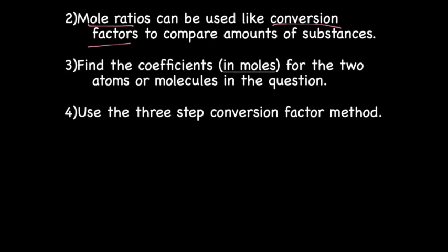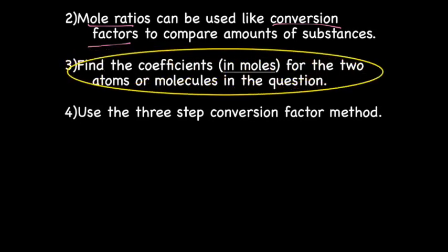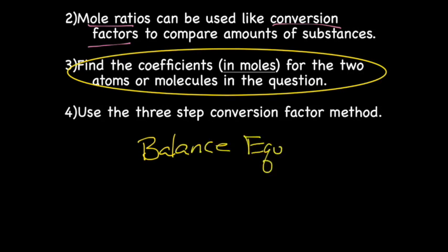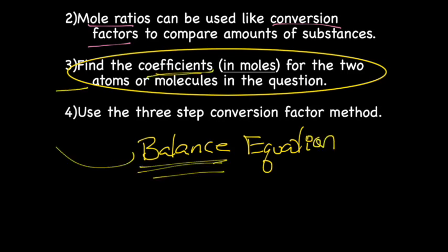When doing mole-mole conversions, you'll find the coefficients in moles — using the unit moles — for the two atoms or molecules in the question. This information comes from the balanced chemical equation, which is where you get the coefficients. After that, we'll use the three-step conversion factor method, just like we've done in the past.